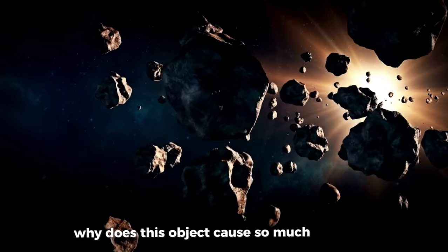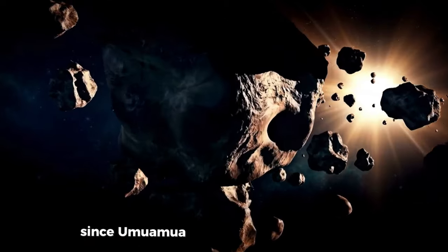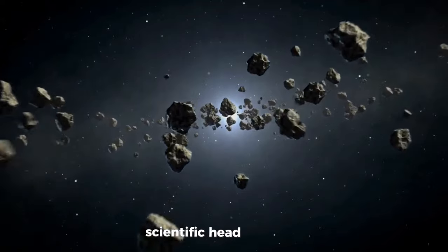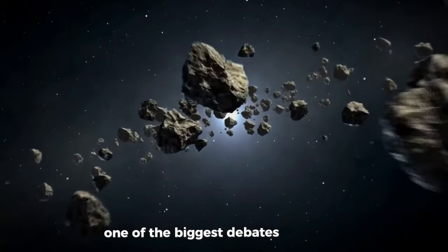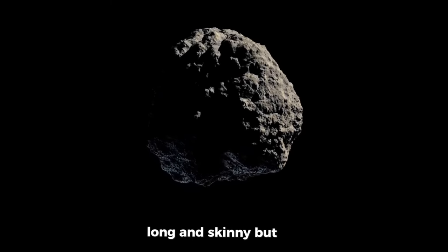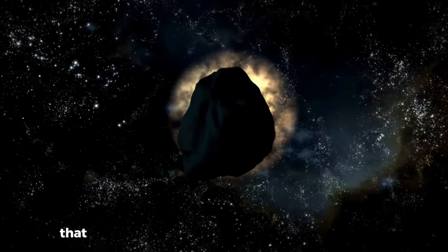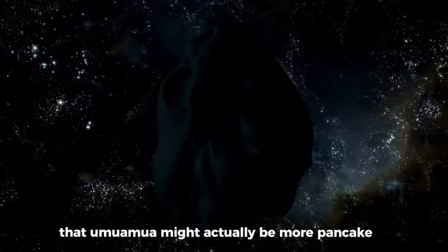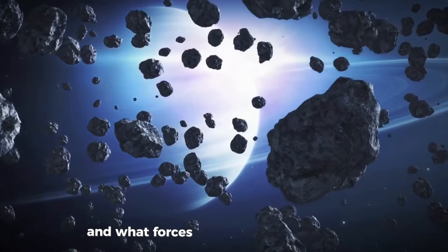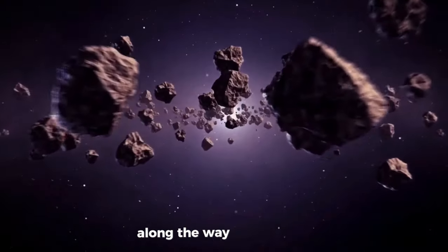Why does this object cause so much fascination? Since Oumuamua zipped through our solar system, it's been the star of quite a few scientific head-scratchers. One of the biggest debates is its shape. Initially, some thought it looked like a cigar, long and skinny. But then, a new camp started arguing that Oumuamua might actually be more pancake-like, flat and wide. This goes to the heart of understanding Oumuamua's journey through space and what forces it might have encountered along the way.